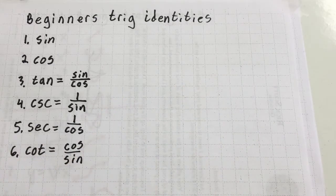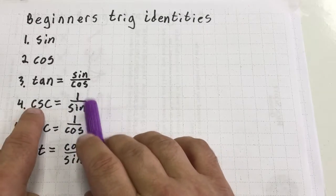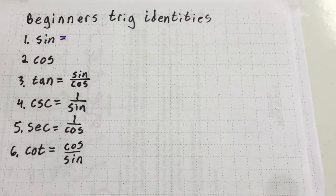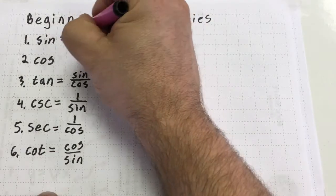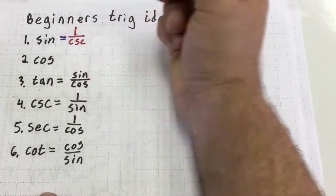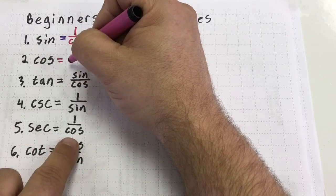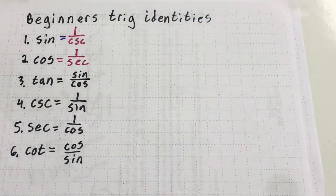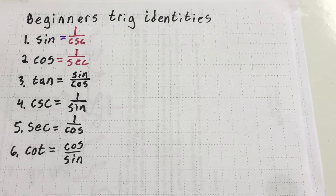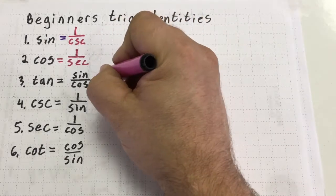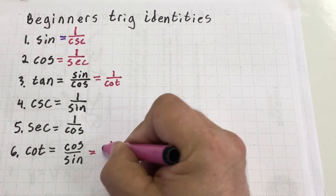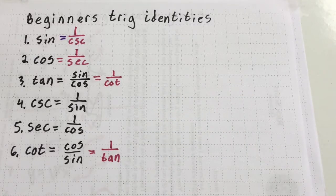This is where it gets a little tricky. Since cosecant is equal to one over sine, that means I can flip-flop the cosecant and the sine and rewrite sine as one over cosecant. I also can rewrite cosine — since secant equals one over cosine, I can flip-flop the secant and the cosine, and now cosine equals one over secant. That's the first six trig functions, and I can get a spin-off identity from those. I can say tangent is equal to one over cotangent, and cotangent is equal to one over tangent. And that exhausts those basic ones.